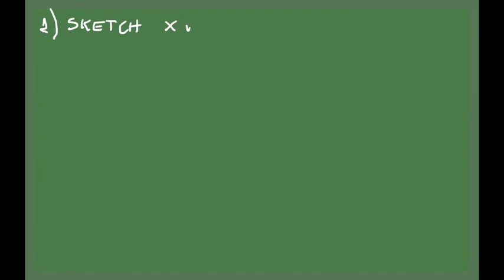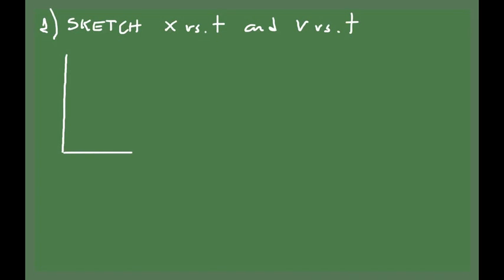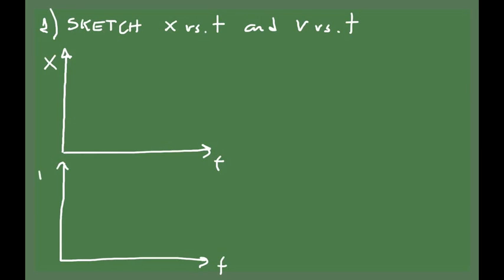The first step is to sketch the situation. For a kinematics problem, the sketch is a little bit more involved than in other problems. I would suggest to always do a position versus time and a velocity versus time plot. In other kinds of physics problems, such as Newtonian mechanics, the sketch will be something less elaborate — a pictorial representation of the situation.